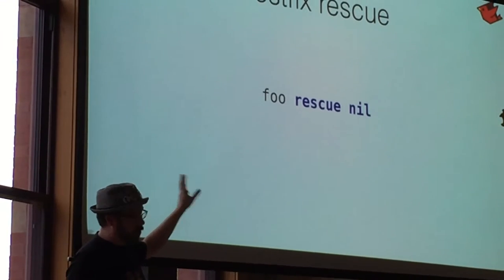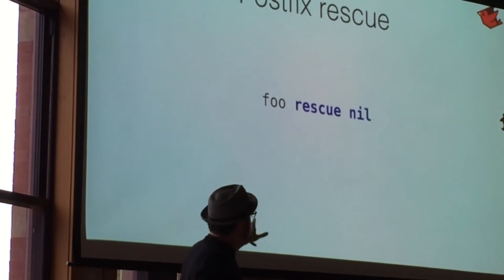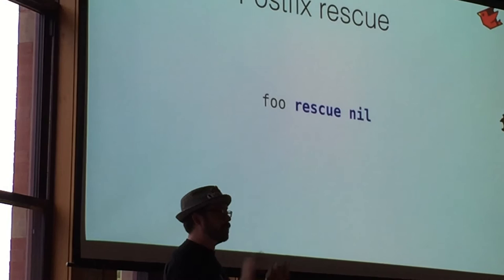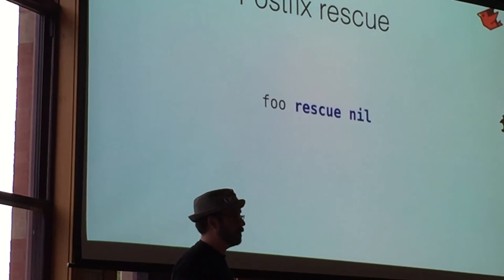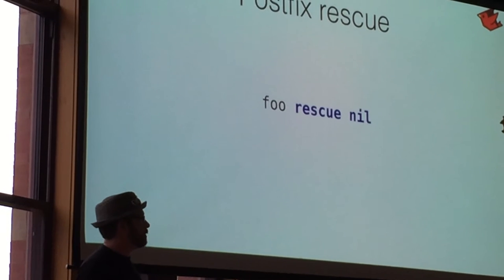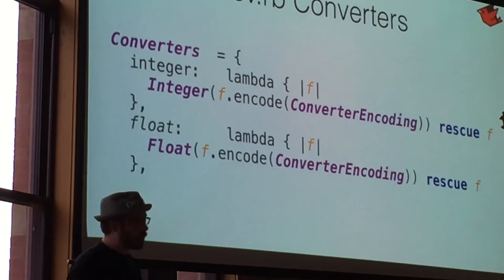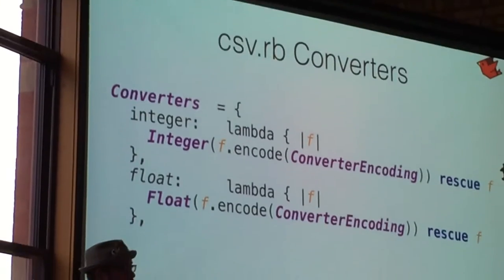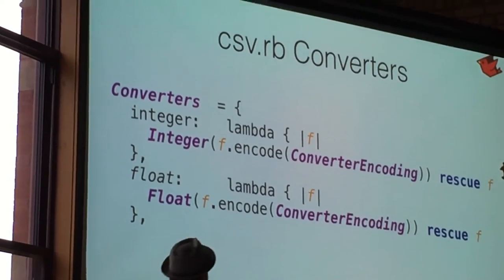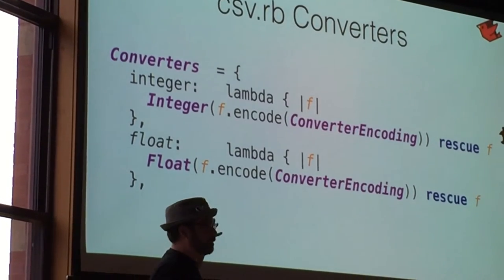So here what we're doing, we're making a call to foo that we assume is going to fail. There's going to be an exception. We don't care about the exception. If it fails with an exception, just return nil from this expression and move on. Walk away from the exception. Which is certainly valid in certain cases if you're just testing out a feature. A more concrete example here from csv.rb.